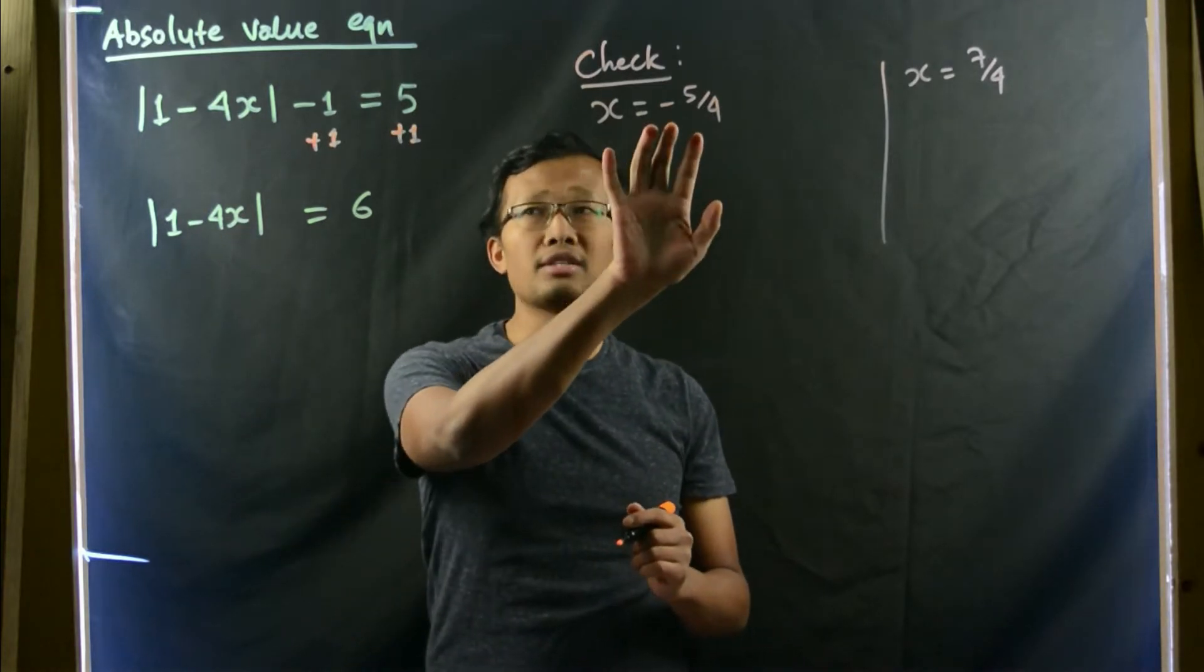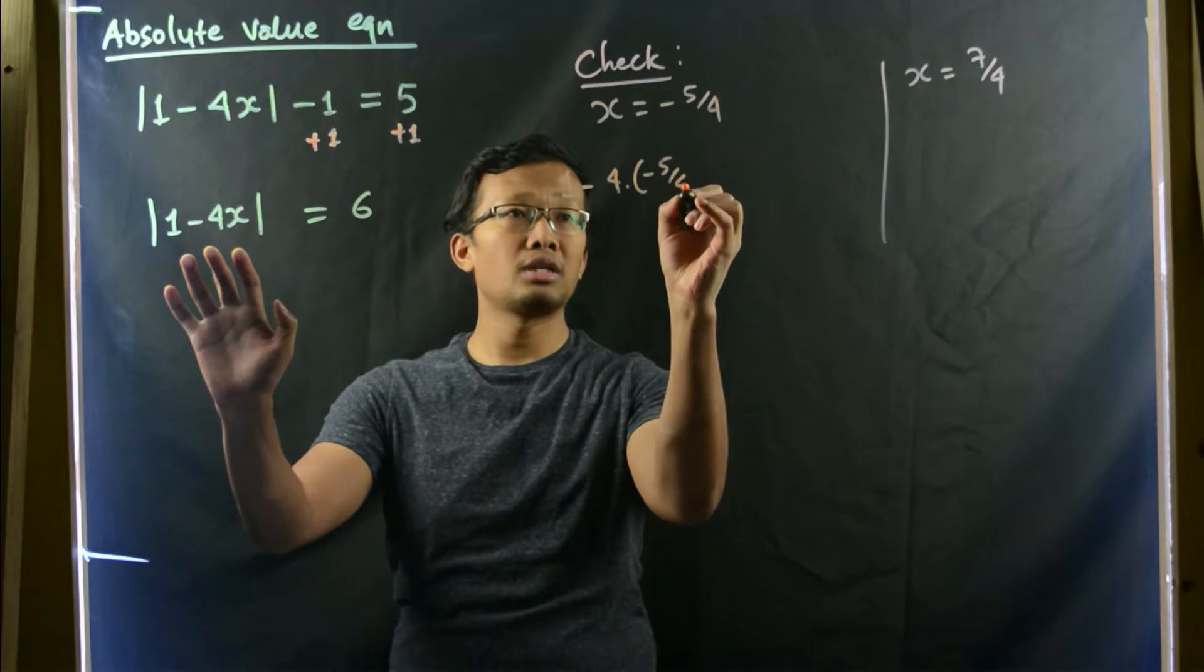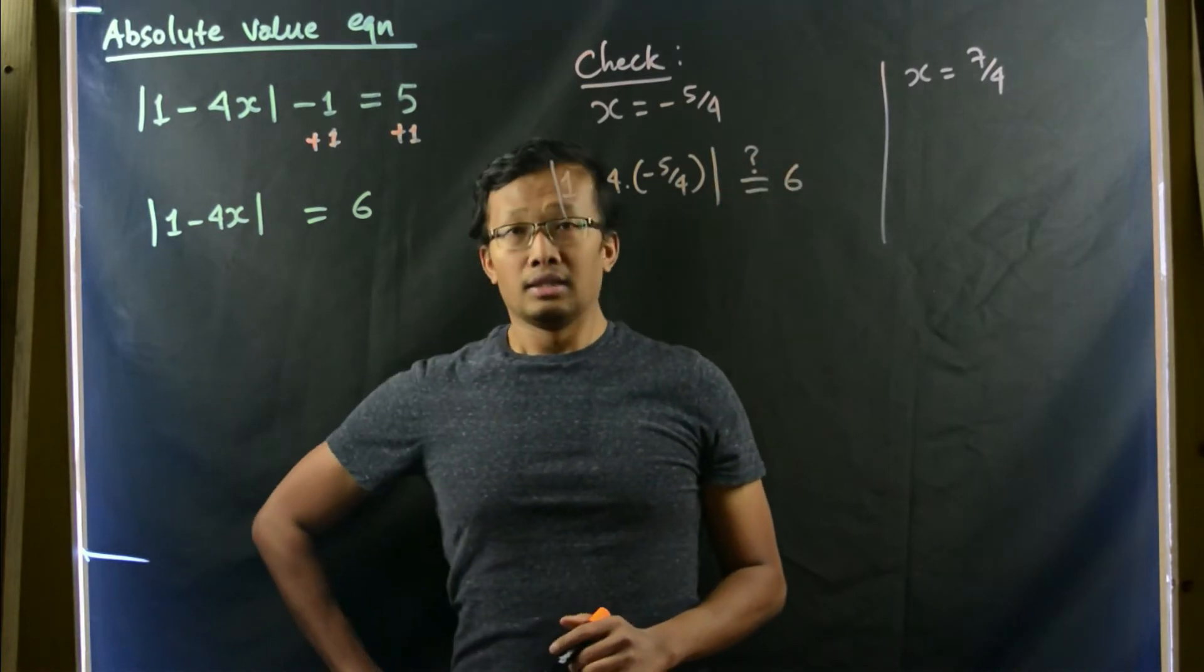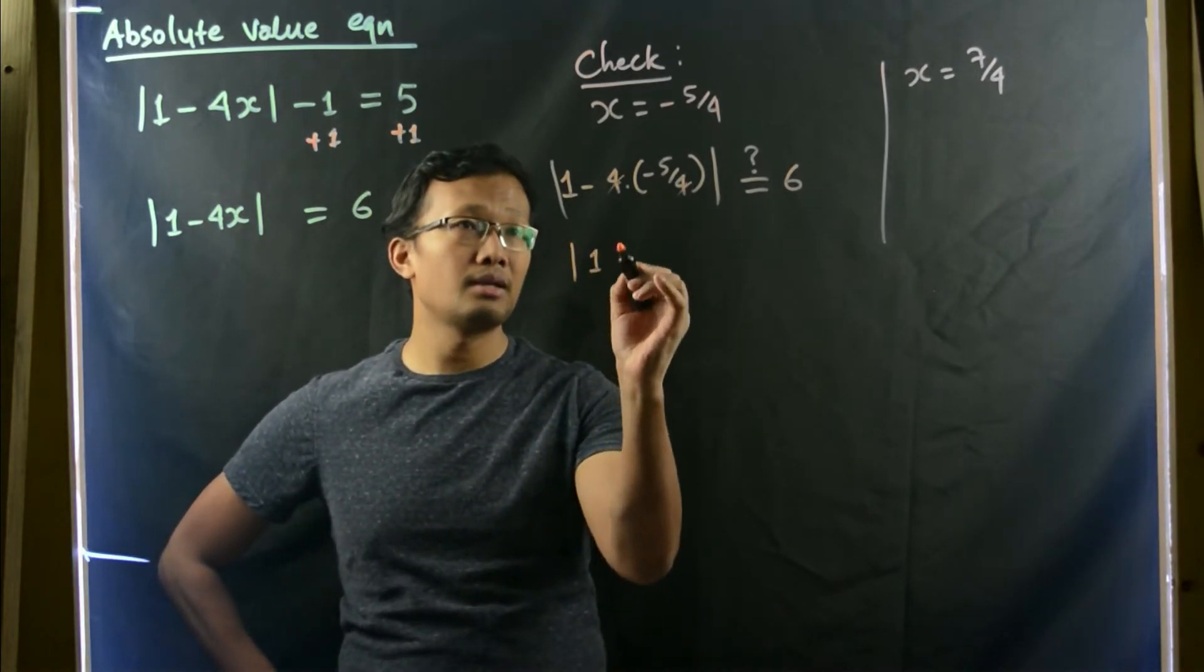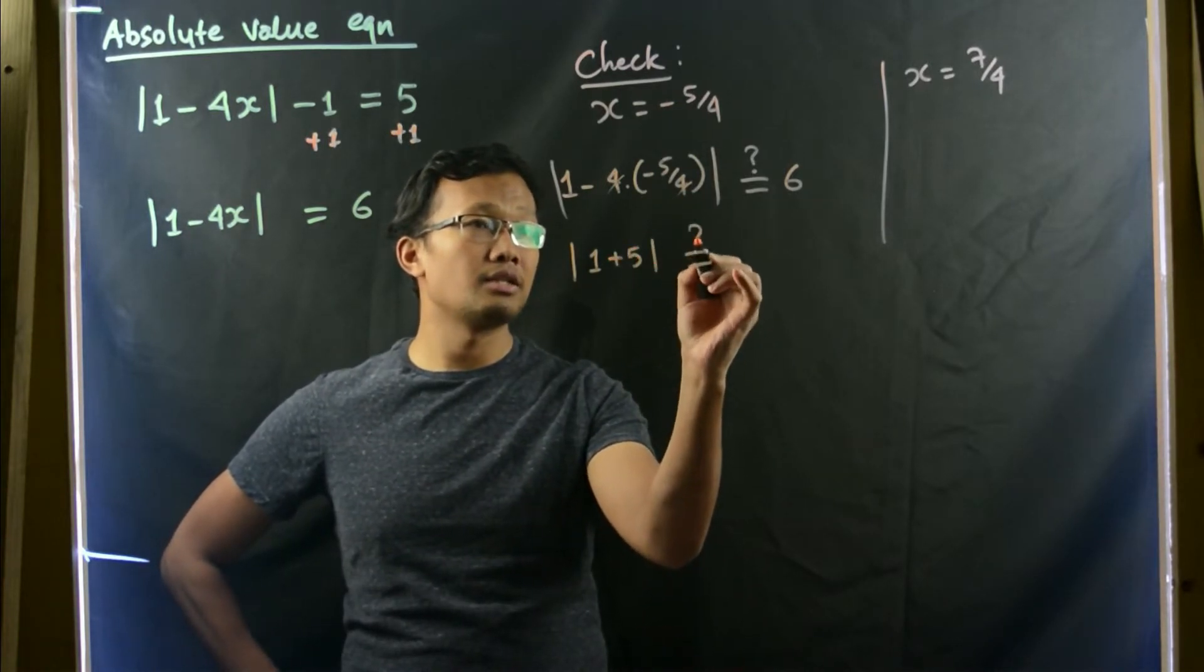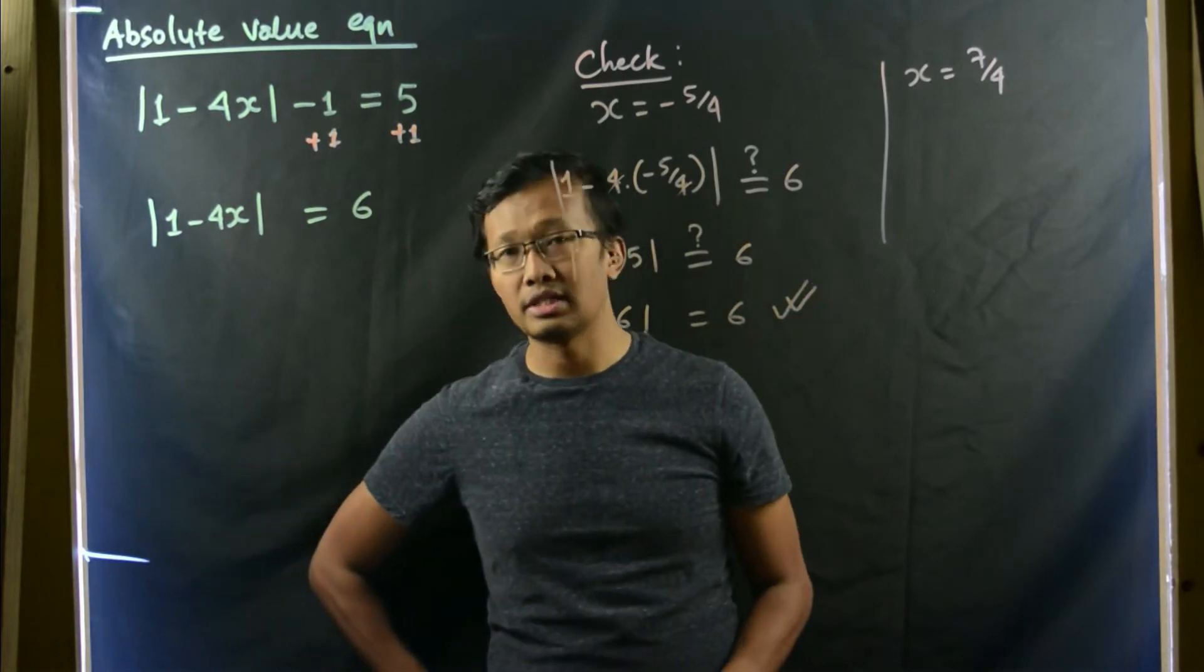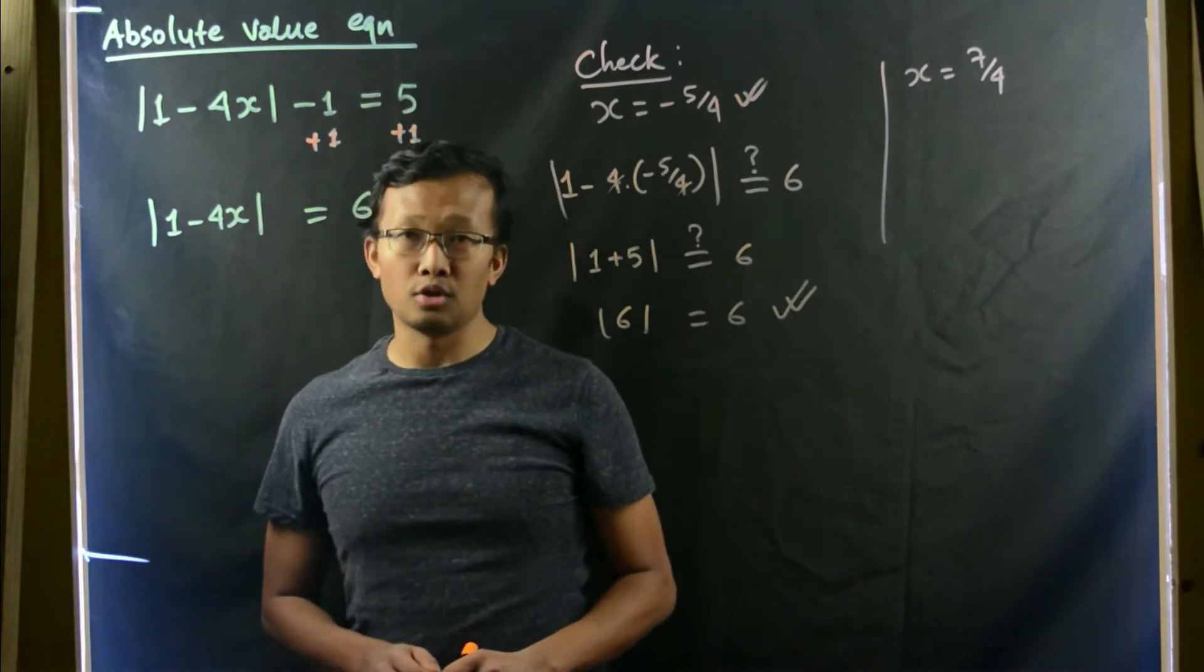Let us plug in this value, which becomes 1 minus 4 times negative 5 over 4. We are not sure whether it is true or not, so we place a question mark. You can see that this 4 and this 4 can be cancelled out, which is simply 1 minus minus 5, that's 1 plus 5. 5 plus 1 is 6, which is a positive number, so it equals 6. This is a true statement. Thus, this is a correct answer for the given absolute value equation.